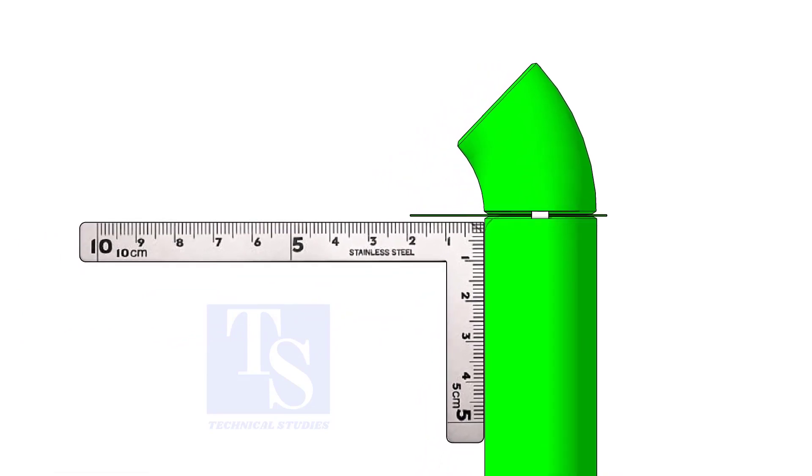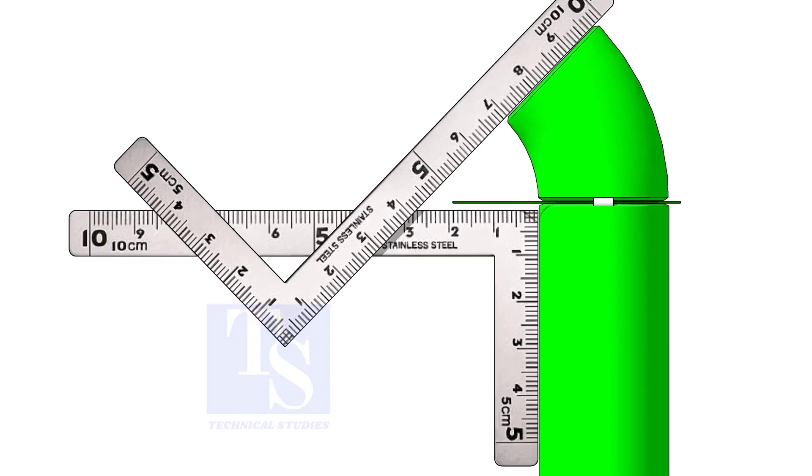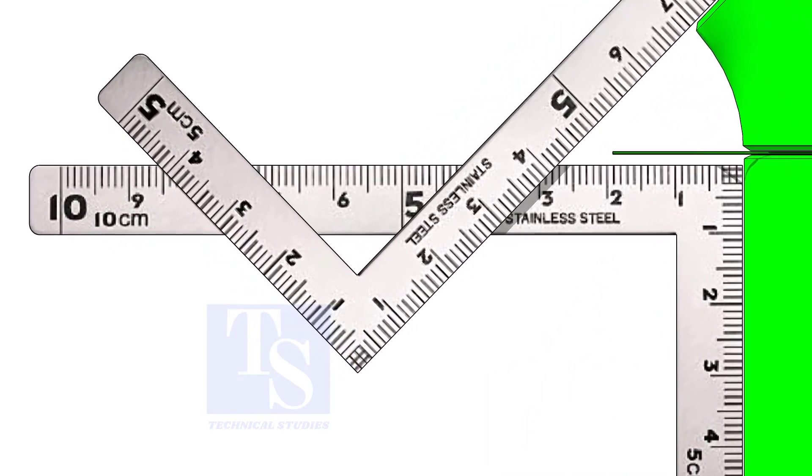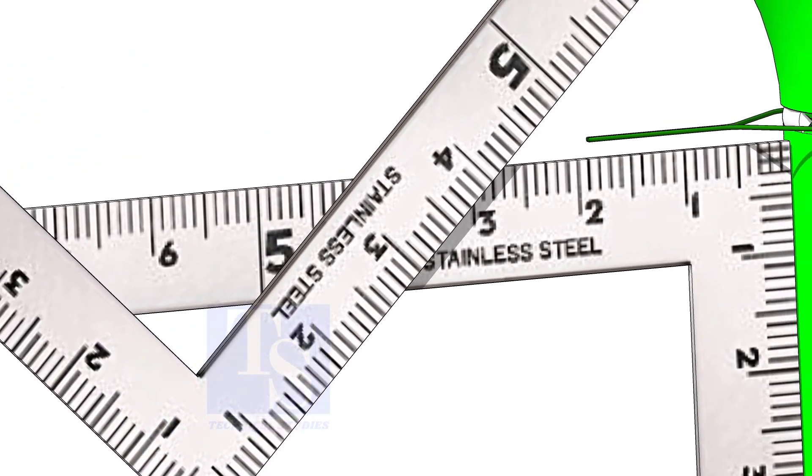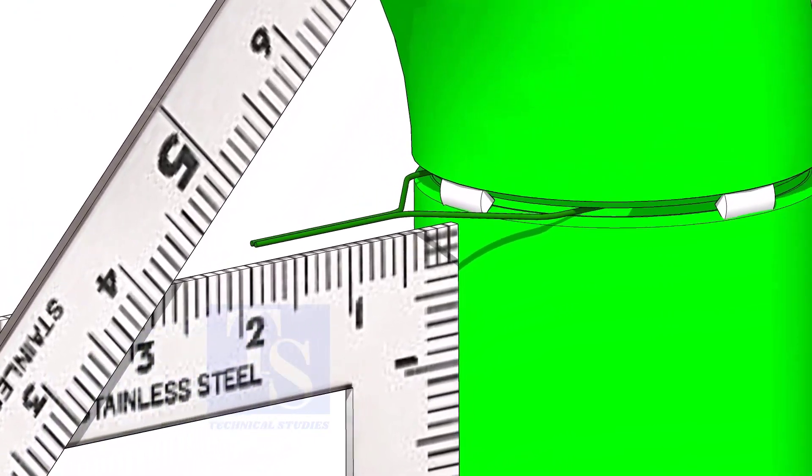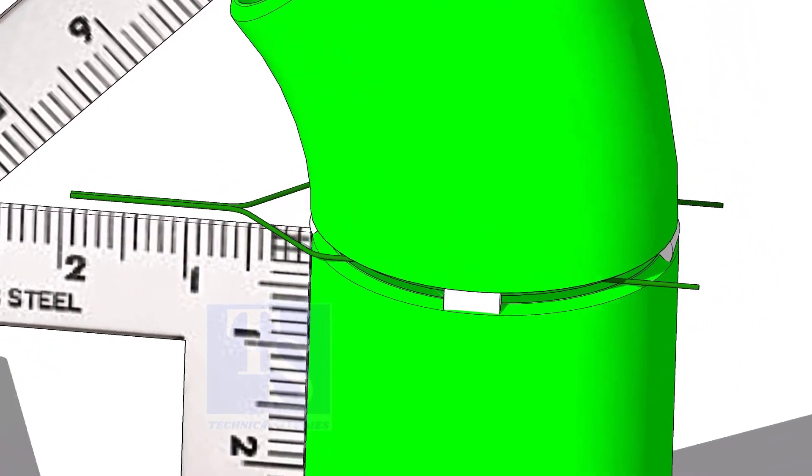Hold two right angles, as shown. If required, rotate the elbow gently to maintain the measurements equal. Tack weld on both sides and complete the welding.